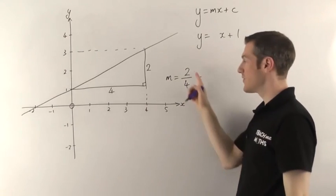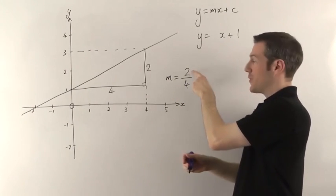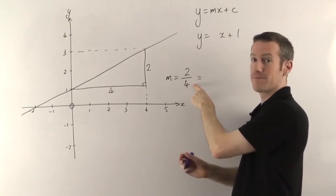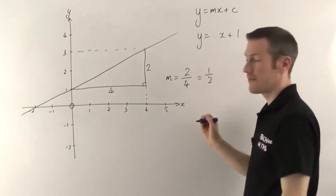Now be careful here. 2 divided by 4 is not 2. The smaller number is on the top here, so it's a fraction. Check if it cancels. This one does—in this case it cancels down to a half.